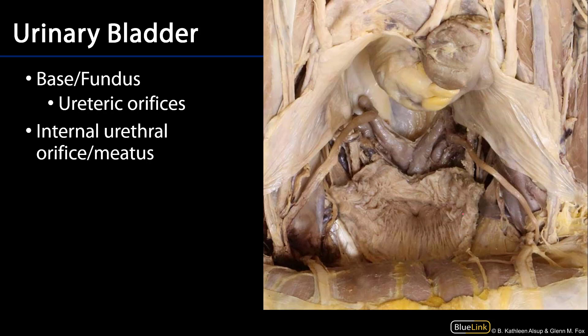Here we have an anterior view of the urinary bladder with the superior surface removed. Here is anterior, here is posterior, and what I'm outlining here would be the wall of the bladder. We can see some of the seminal vesicle along with the distal portions of the ductus deferens there.